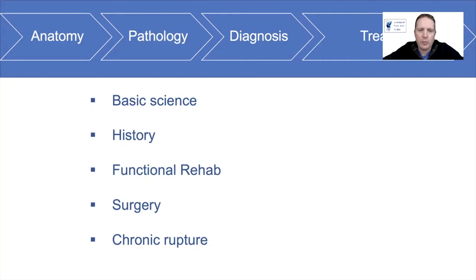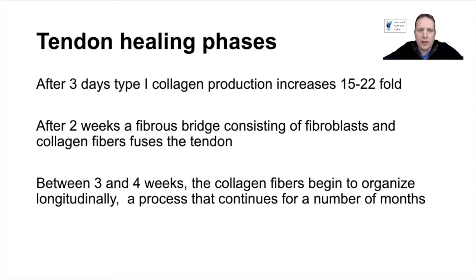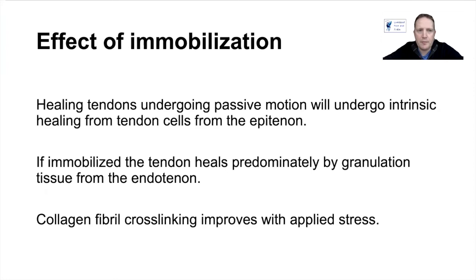For treatment, I'm going to go through the basic science initially, then some history, functional rehab, surgery, and treatment for chronic ruptures. The basic science goes back to work from the 1970s and 80s, based on flexor tendons in the hands. After three days, type 1 collagen production increases 15 to 22 fold. After two weeks, the fibrous bridge consists of fibroblasts and collagen fibres, which fuses the ends of the tendon. Between three to four weeks, the collagen fibres begin to organize longitudinally, and this process continues for a number of months.